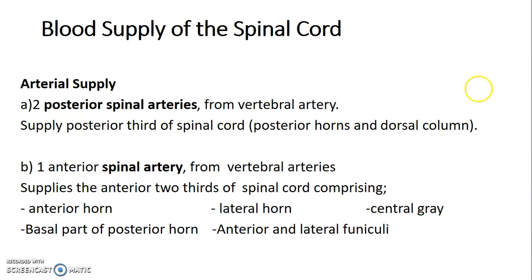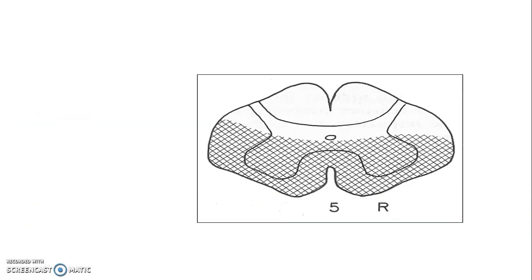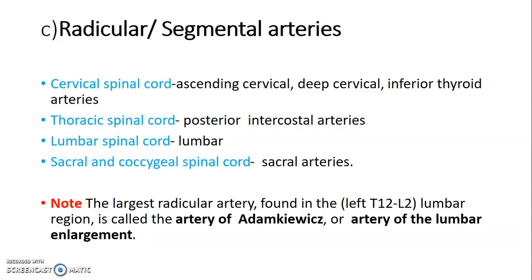The blood supply of the spinal cord comes mainly from the vertebral artery, which gives two posterior spinal arteries supplying the posterior side — including the dorsal horns and dorsal columns. The anterior spinal arteries are two but join to form one, supplying the anterior two-thirds of the spinal cord: the ventral horns, lateral horns, central gray matter, basal part of the posterior horn, and the anterior and lateral funiculi.